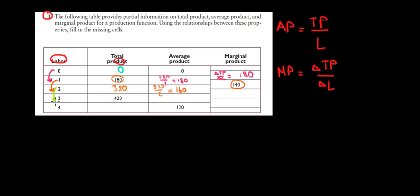Now let's go to the third employee. We go from two to three in our labor. So we have now the total product increasing from 320 to 420. It increased by 100 units. So the marginal product is going to be 100.